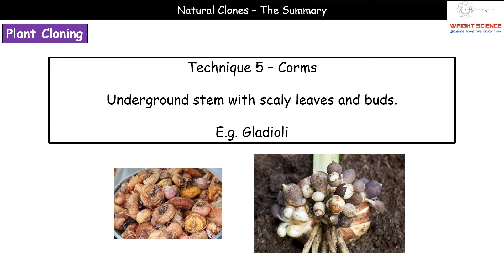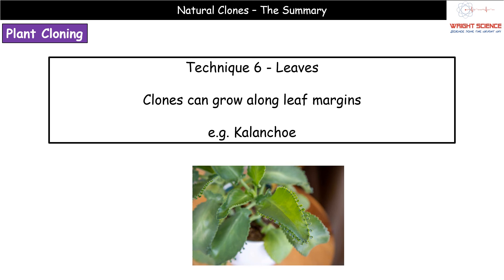The fifth technique uses corms — again an underground stem, but with scaly leaves and buds. A common example is the gladiolus. You start with a single corm, plant it in the ground, and after a growing season when you dig it up, you find multiple additional corms that have grown out from the original, each a genetically identical clone.